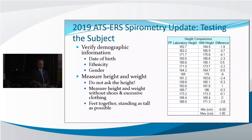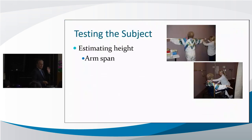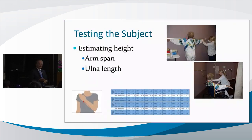If for some reason the subject cannot stand, or they have kyphosis, scoliosis, or kyphoscoliosis, you can use either arm span or ulnar length to estimate someone's original standing height.